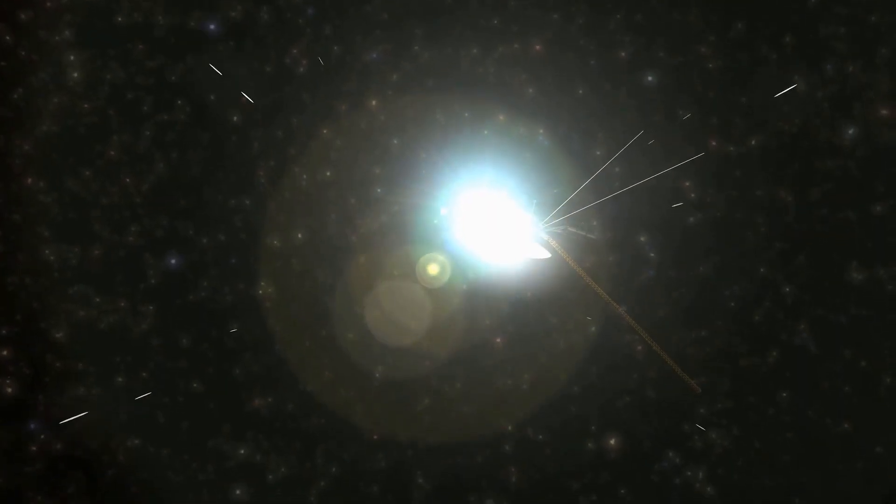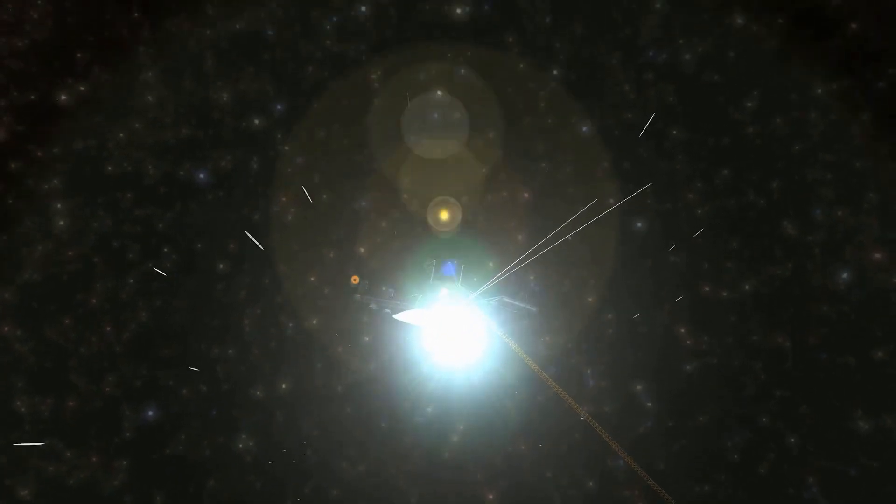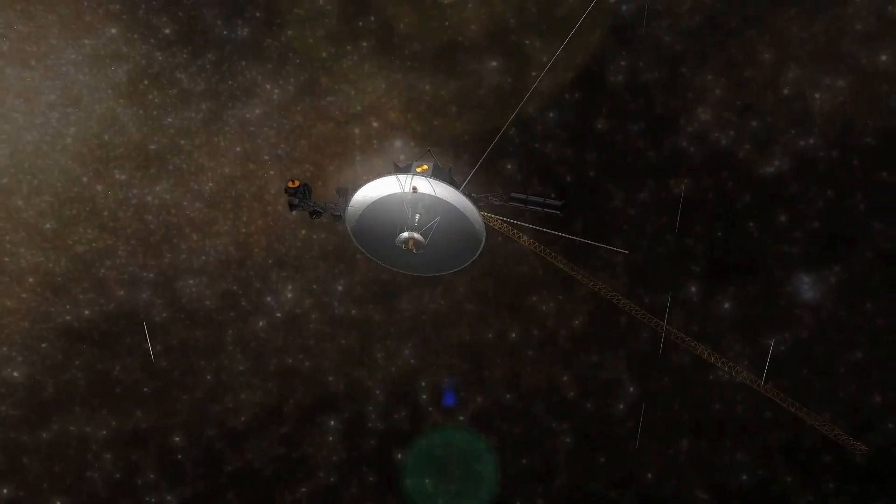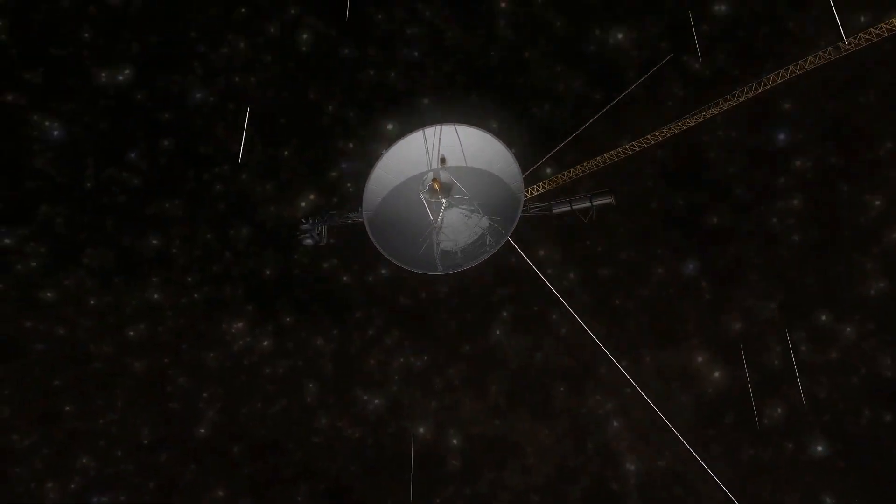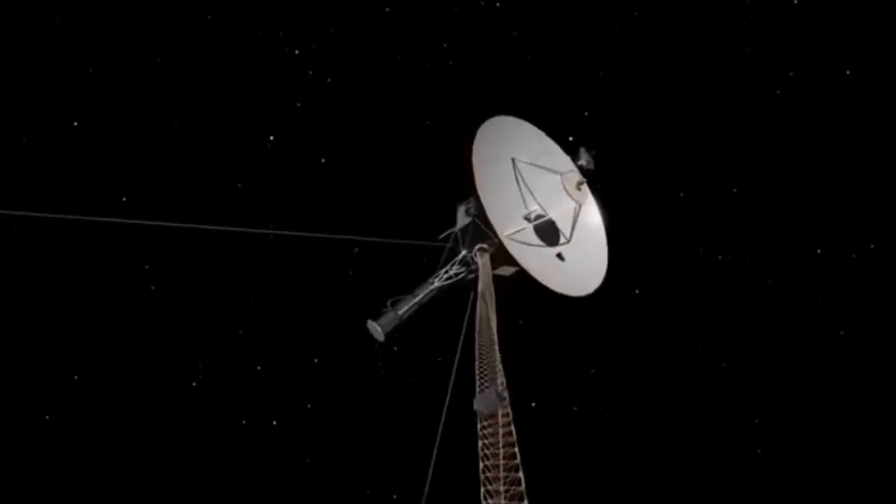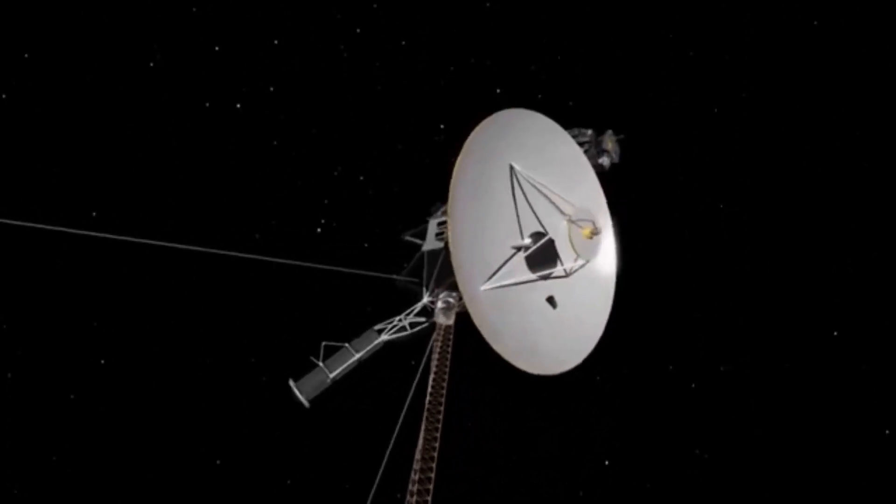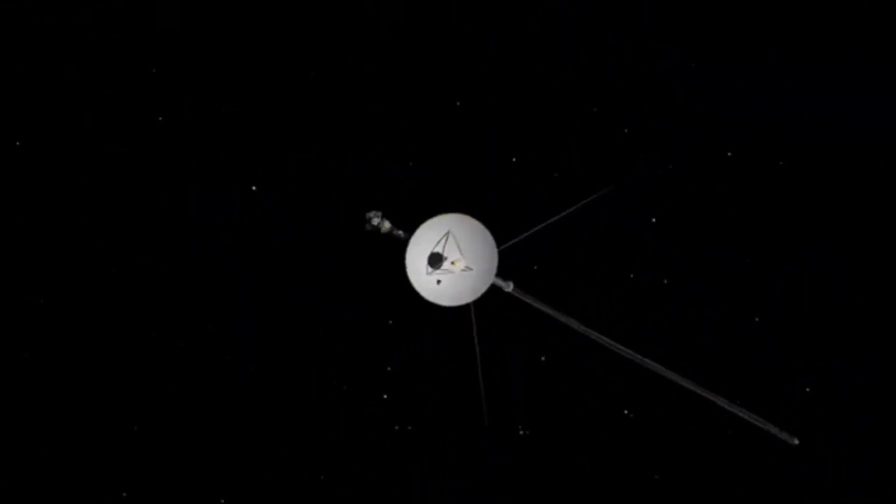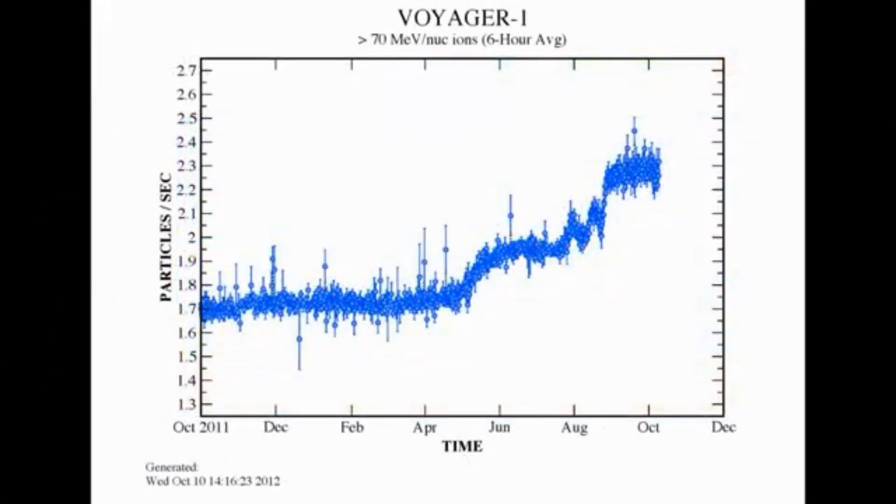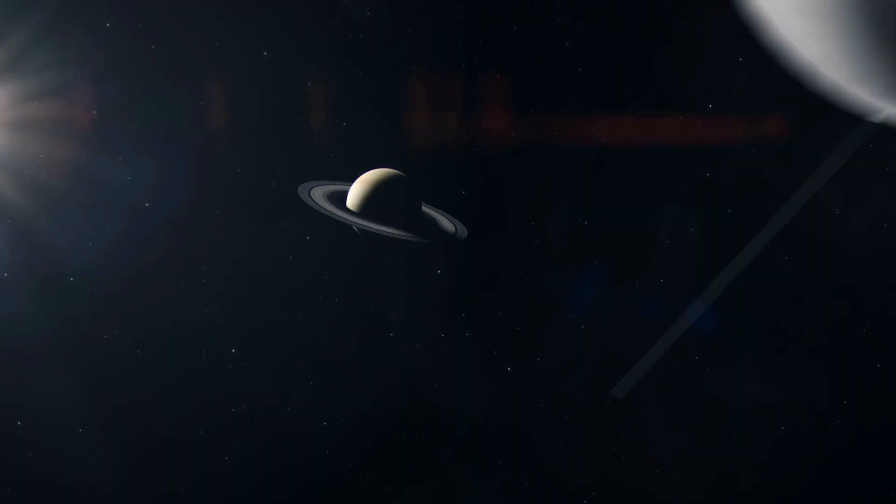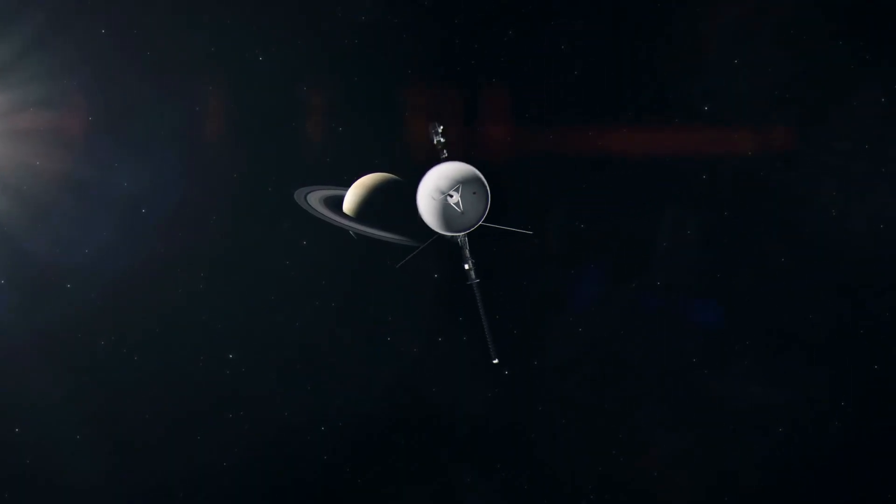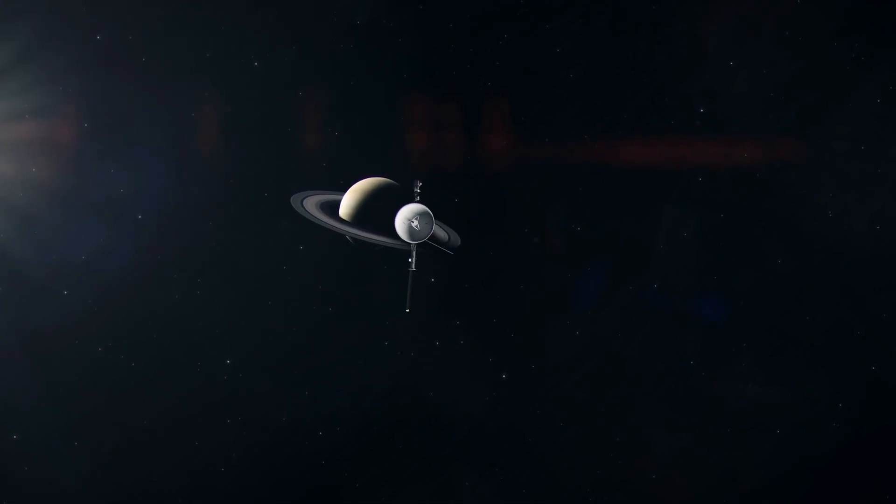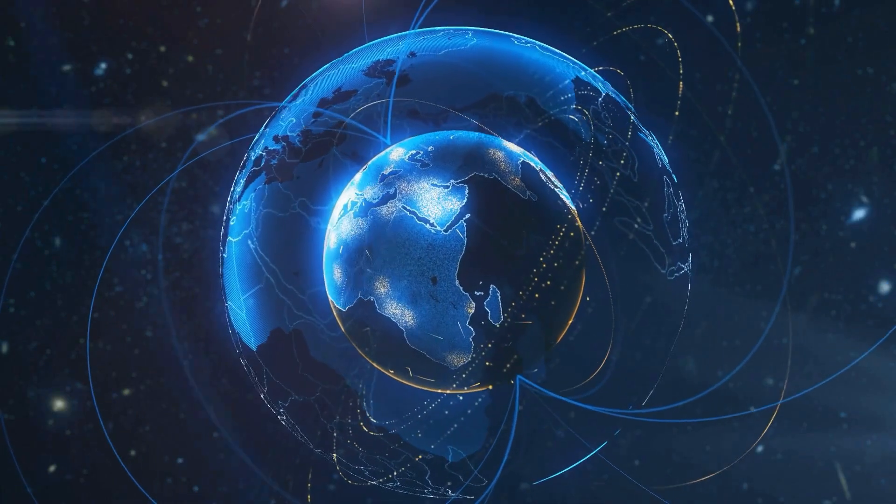Adding to the mystery, in May 2023, Voyager 1 experienced an unusual hiccup. Its Attitude Articulation and Control System, known as AACS, which is responsible for pointing its high-gain antenna, began transmitting perplexing scrambled data. For a moment, it seemed as if Voyager 1 was suffering from a kind of electronic aphasia, unable to communicate clearly with Earth.